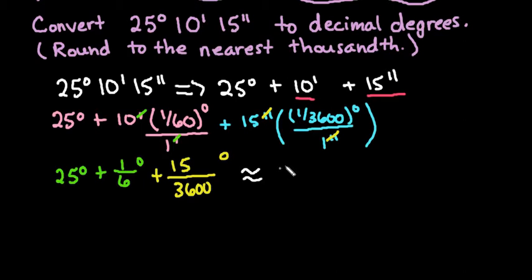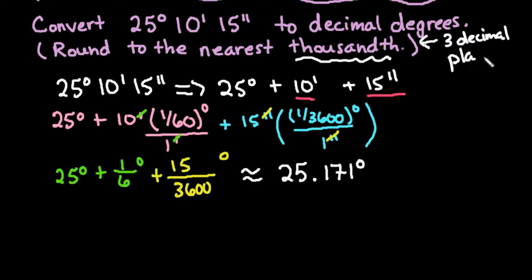And when you do that, you should end up with 25.171 degrees. And I did round this to the nearest thousandth. Remember that thousandth means three decimal places. So anytime you see thousandth, that means three decimal places should be in your answer.